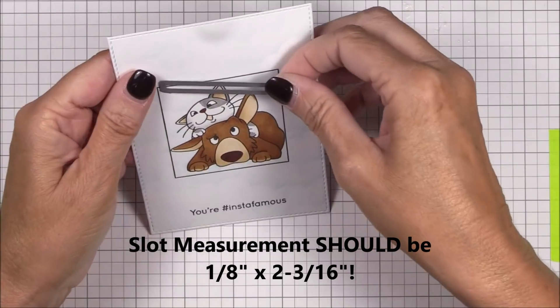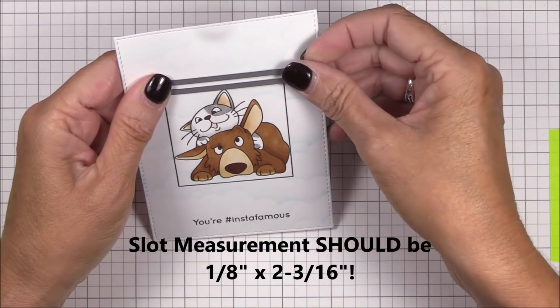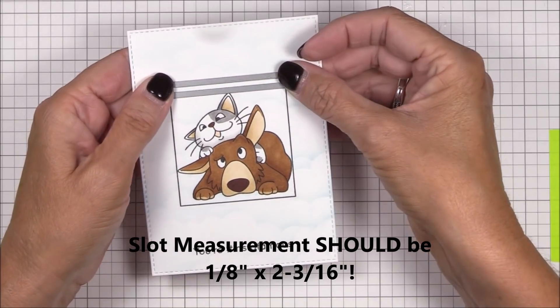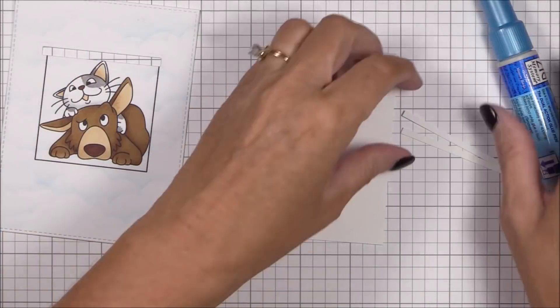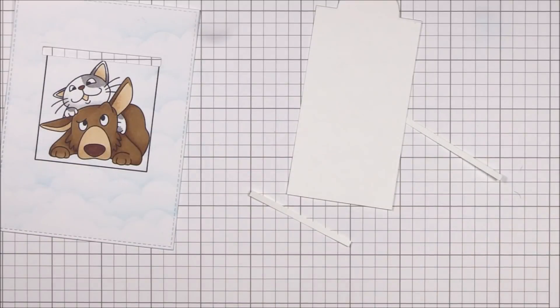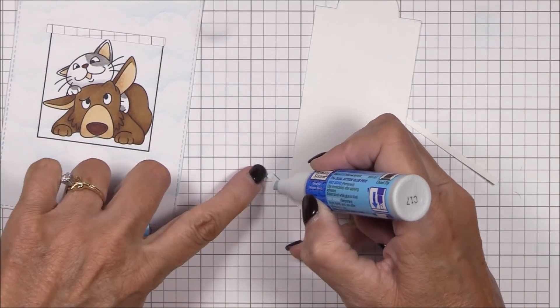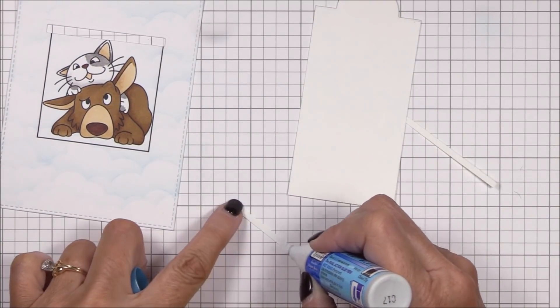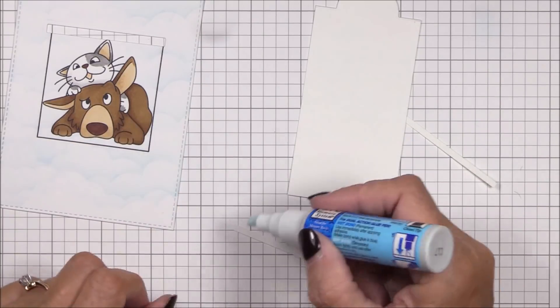Okay I rummaged through my stash to find a die that would cut a slot at the top of the image and decided that one of the dies from the gift shaker window and frame dynamics would work. In hindsight I probably overthought this a little bit and you'll see why later on in the video. But let's move on.